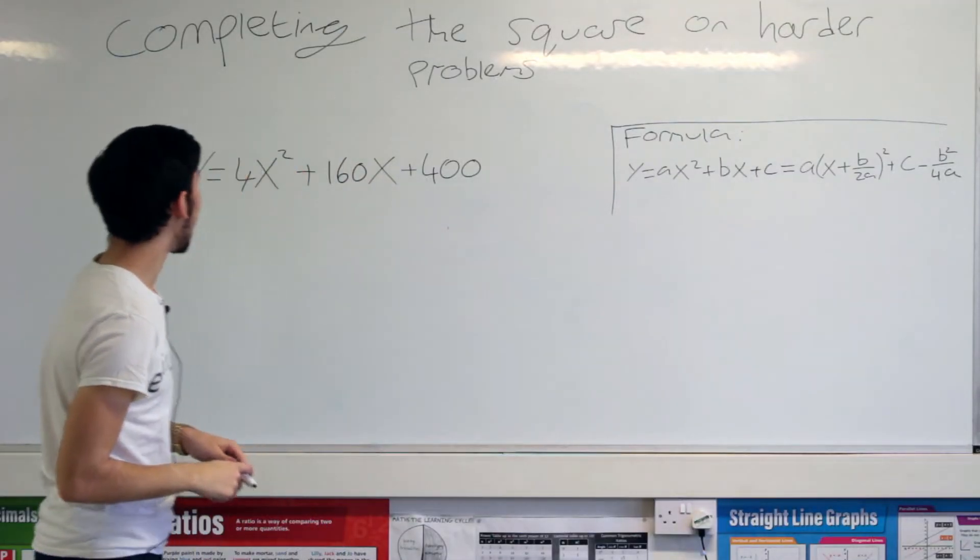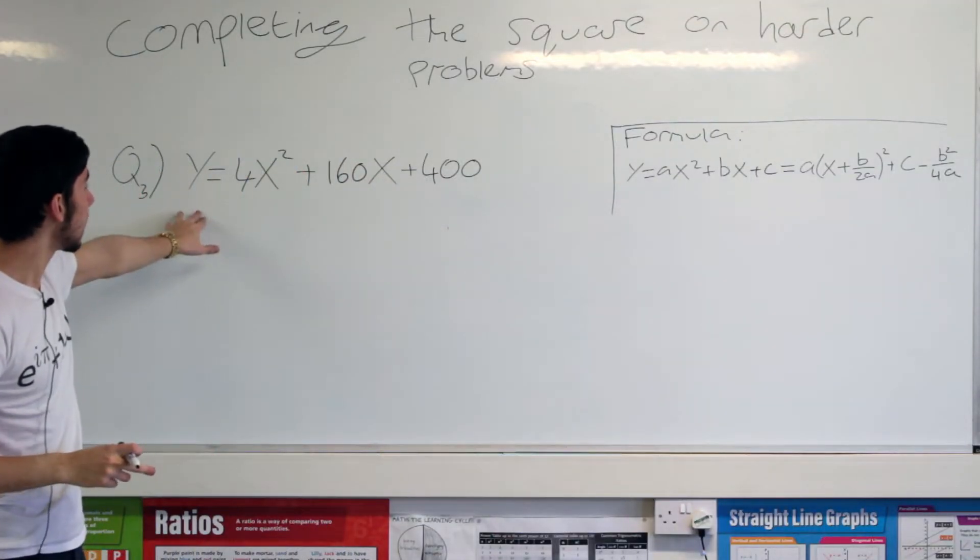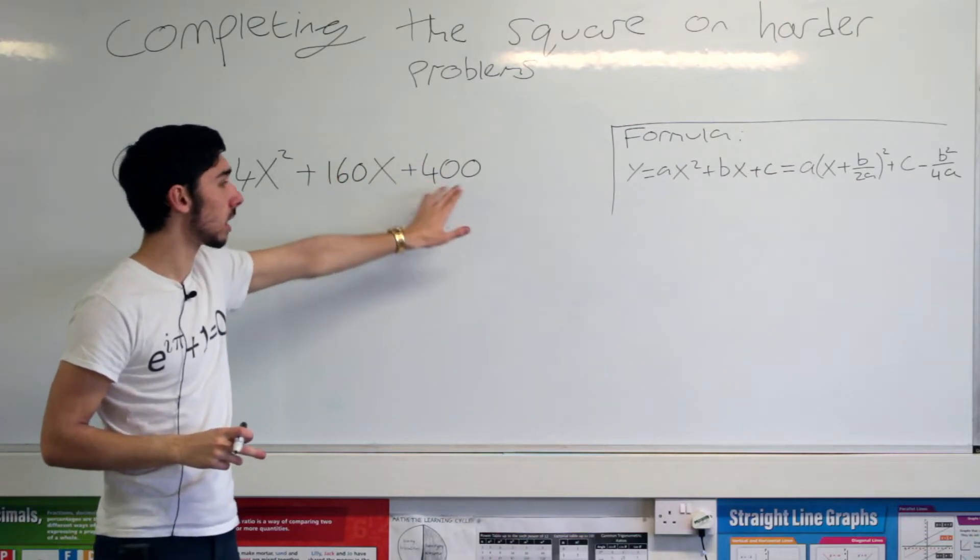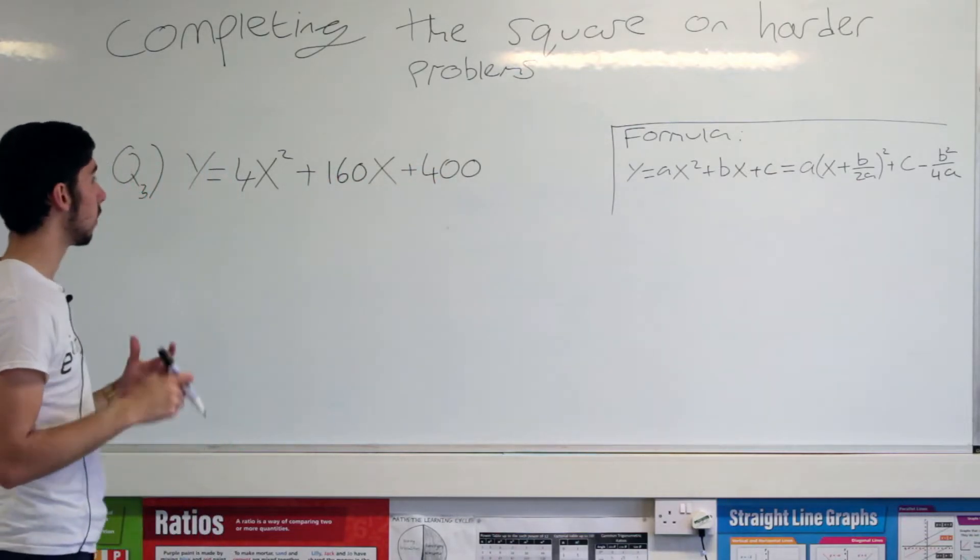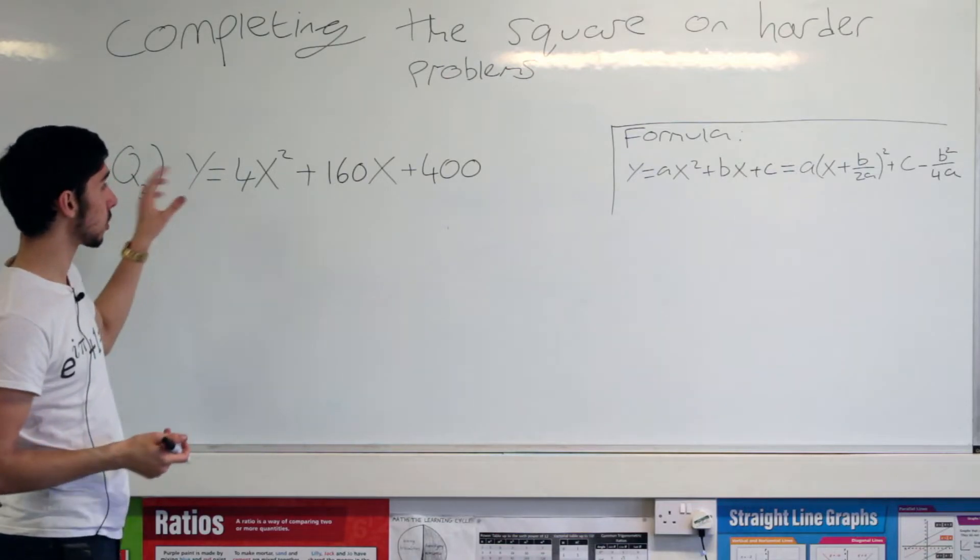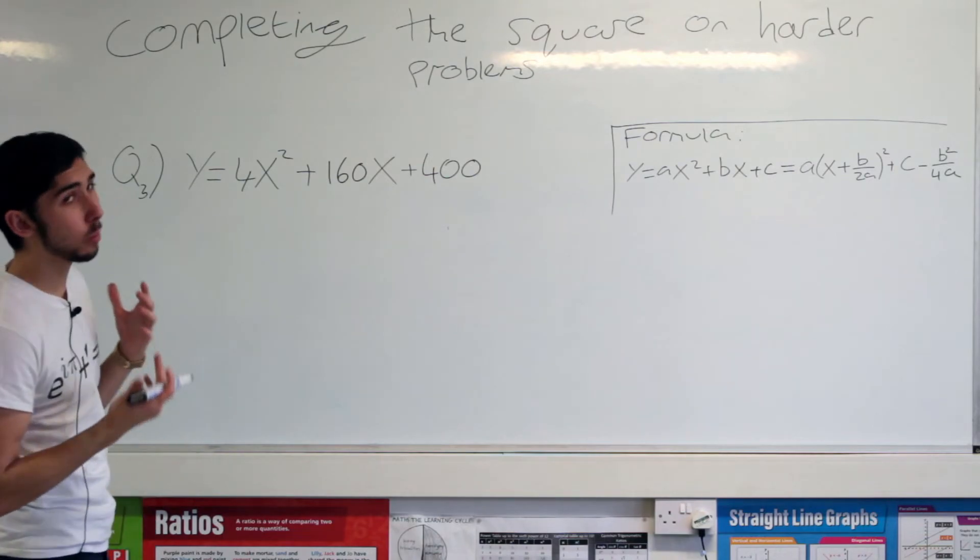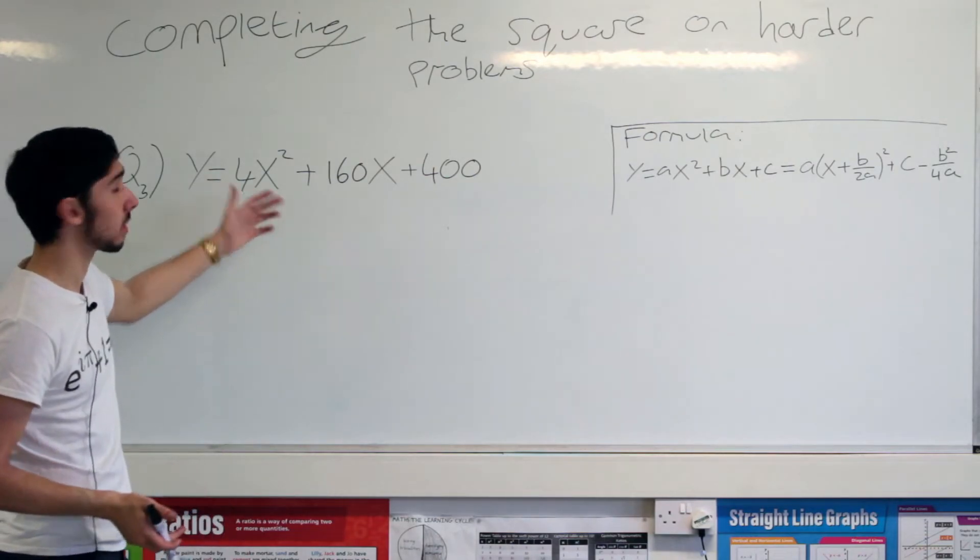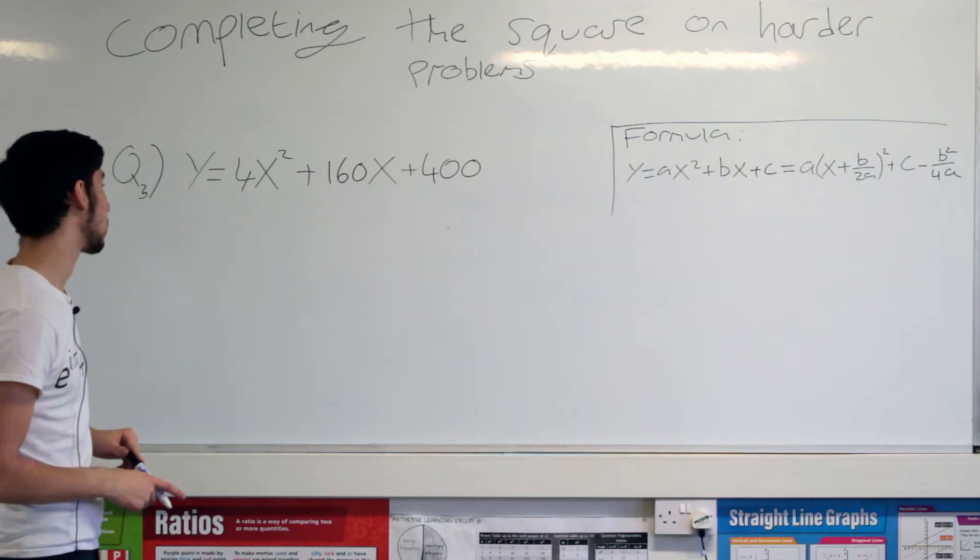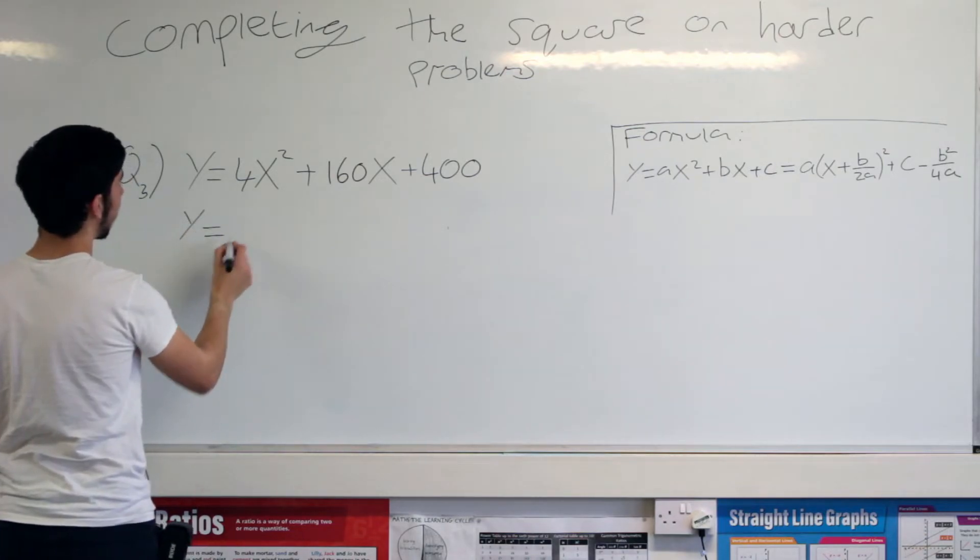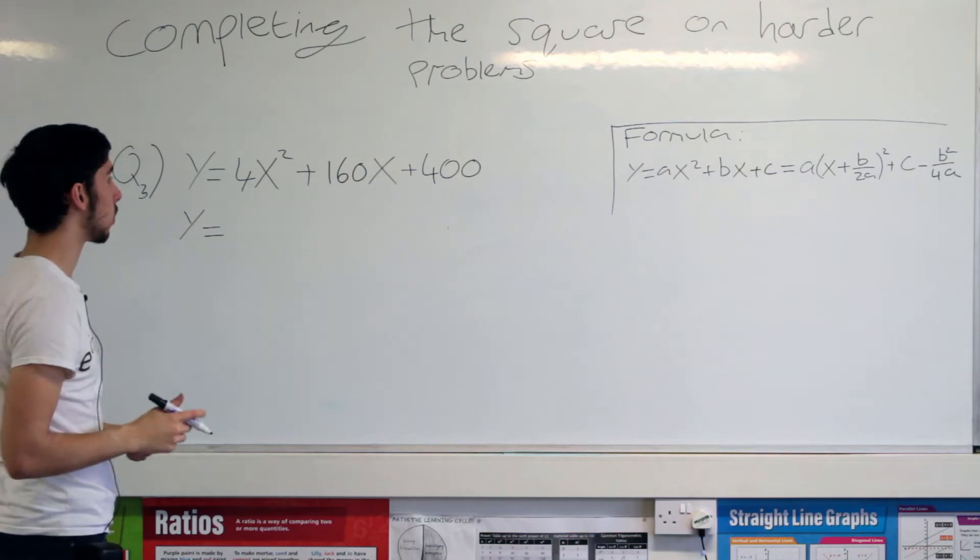Okay then guys, we have got another question here. Y equals 4x squared plus 160x plus 400. Okay, positives, that's nice, but what's not nice is a 4 in front of our x squared. We don't normally want a 4 or any number that isn't 1 to be in front of our x squared. Okay, so if you get a question like this, you might be thinking, oh no, I don't know what to do. This is what you do.